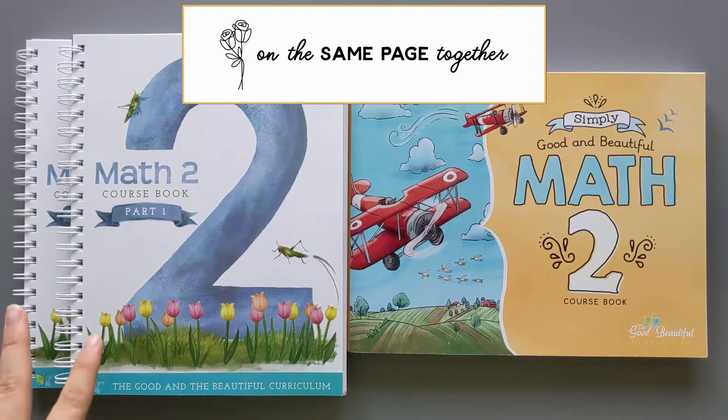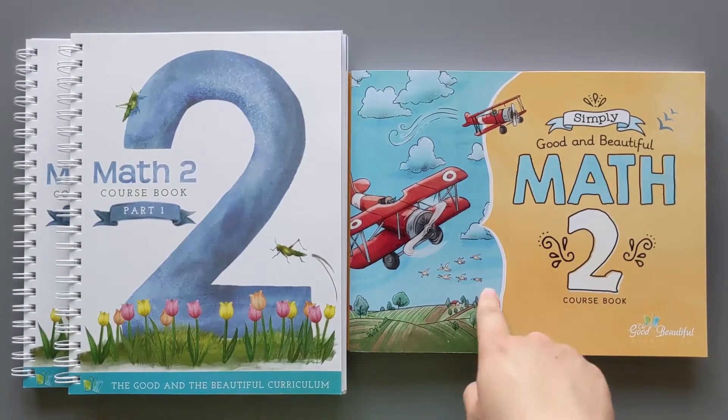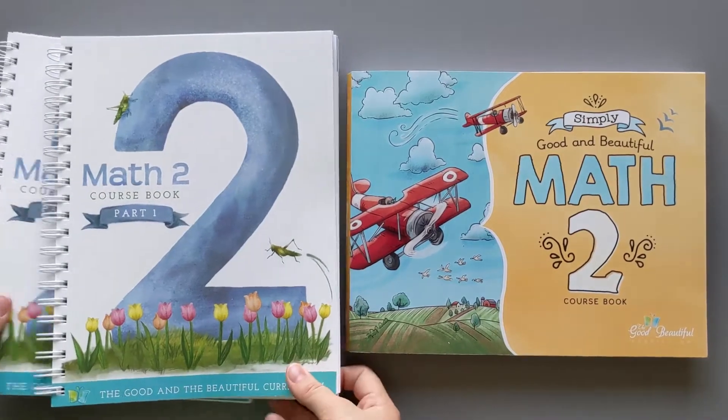Right away you can see that the old discontinued version has two books. The new Simply Good and Beautiful Math has only one book. The second obvious difference is the binding.